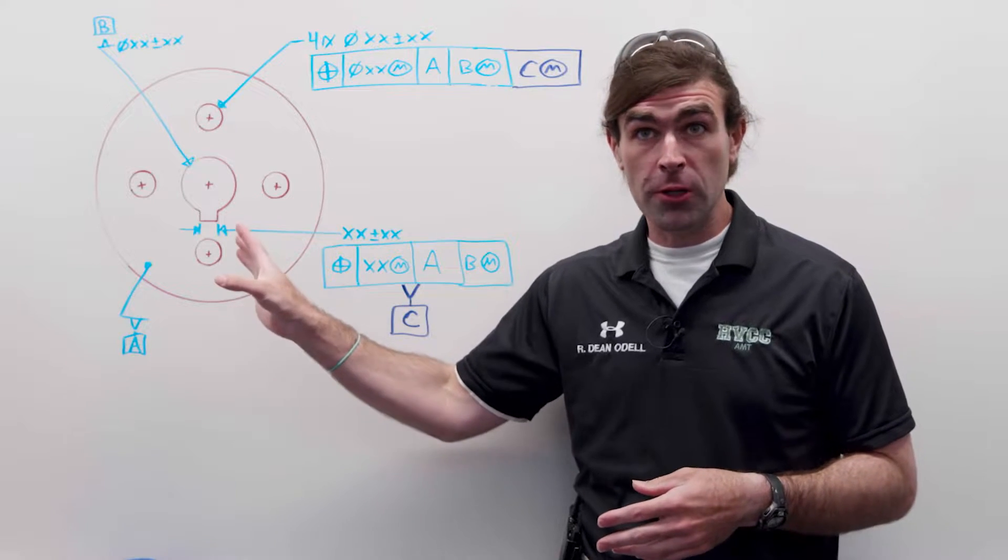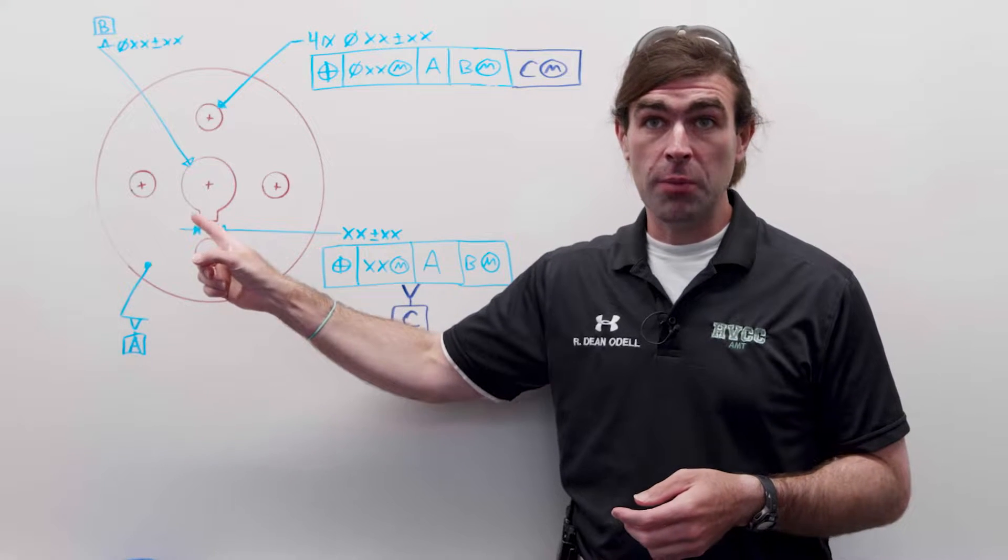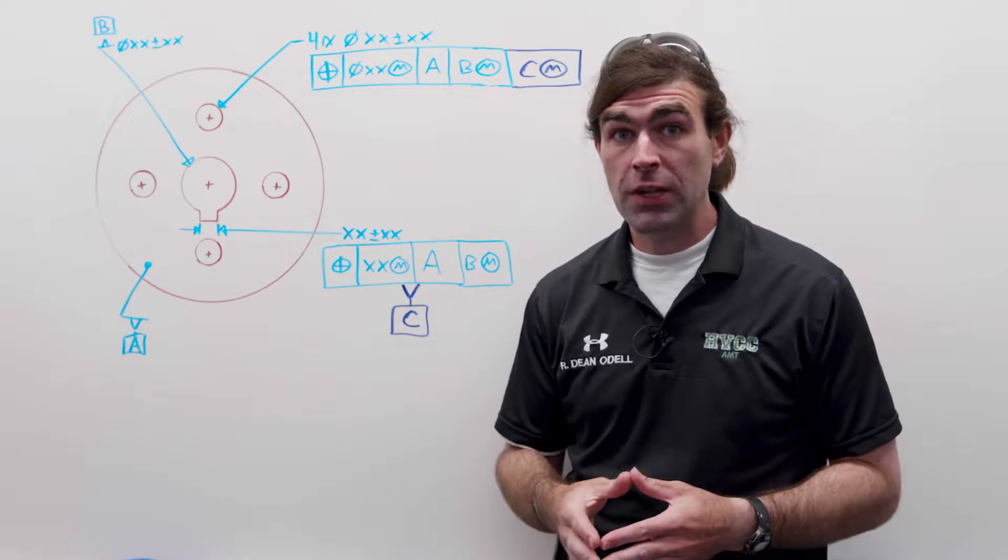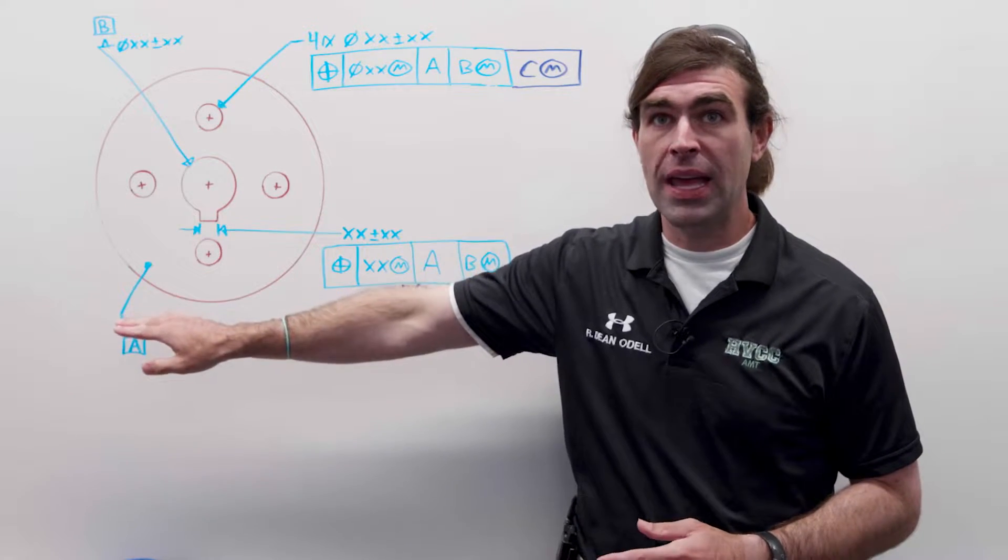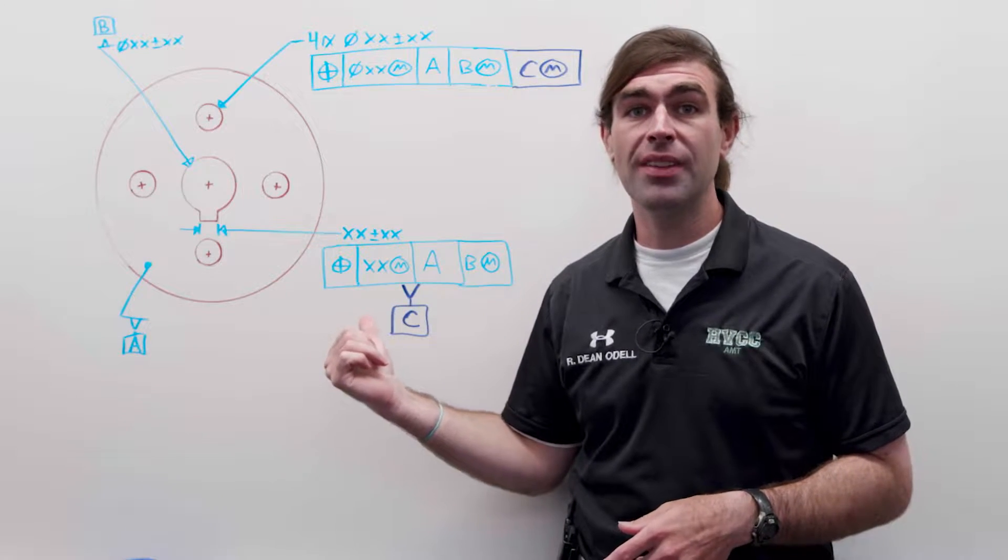So imagine this is a pulley. We've got four holes that are for weight reduction. We've got a hole in the middle for a shaft and a keyway. So one way to dimension this drawing is to make one of the flats of the pulley datum A, make the shaft hole datum B, and then make the keyway datum C.